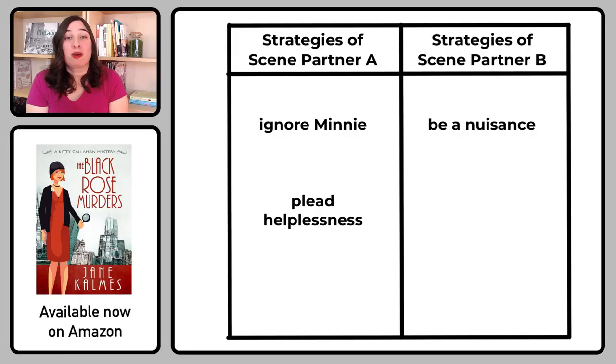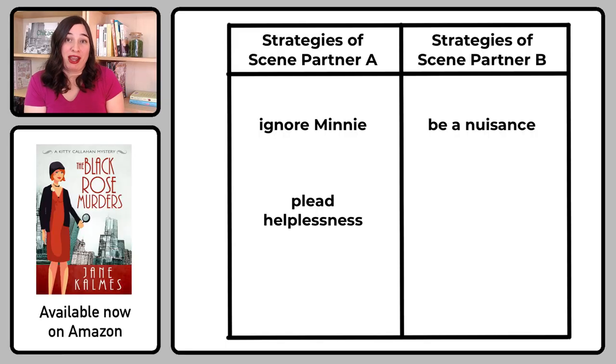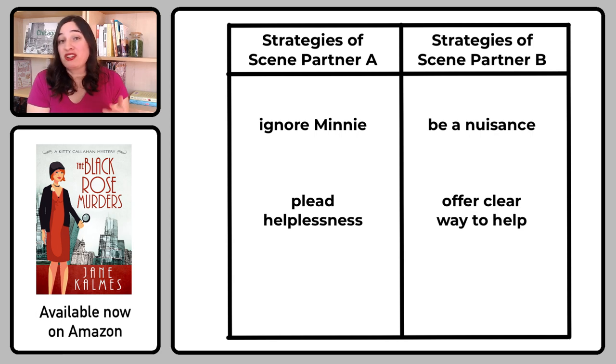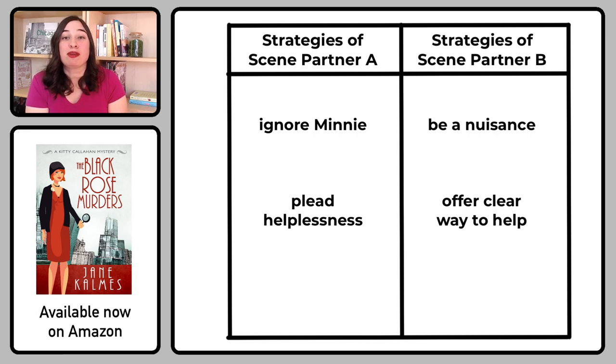This is going to force Peyton to think up a new tactic, and I think she'll plead helplessness. She'll say, 'Look, even if I wanted to help, I wouldn't know where to begin.' But Minnie knows that Peyton is her best shot — no one else around here can talk to ghosts — so she's not convinced by this act. All Minnie has to do to counter Peyton's tactic is offer Peyton a clear way she can help: Minnie knows where an old storeroom is that might have some information about the people who stayed here when Minnie died.